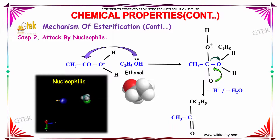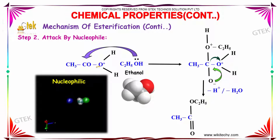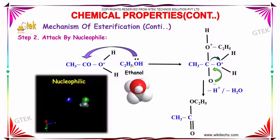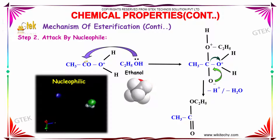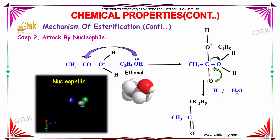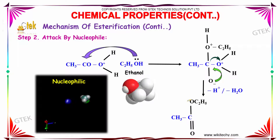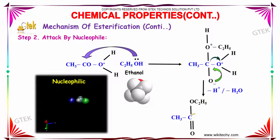Step 2 is the attack by a nucleophile. The protonated form is made to react with ethanol. The lone pair in the oxygen of ethanol reacts with the carbon-oxygen bond here, and the positive electrons shift towards the oxygen as shown. O becomes O negative, and on hydrolysis we obtain the ester CH3COOC2H5.